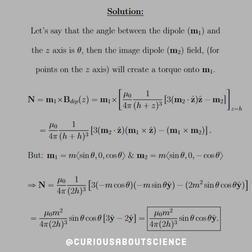So let's go ahead and start with defining everything that we want. For the solution, let's say that the angle between the dipole m1 and the z-axis is theta as drawn. Then the image dipole m2, the field of that dipole for points on the z-axis will create a torque onto m1. The field's going to be pointing up and then trying to push around m1.